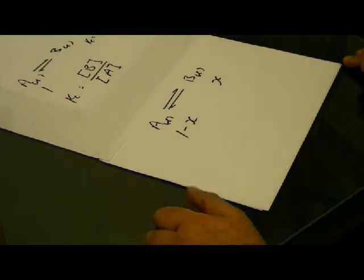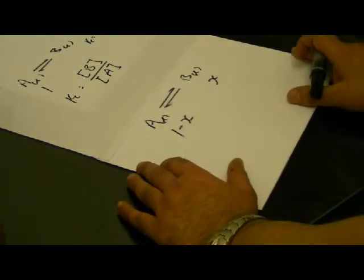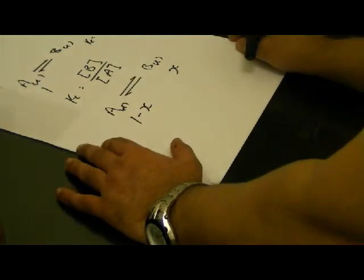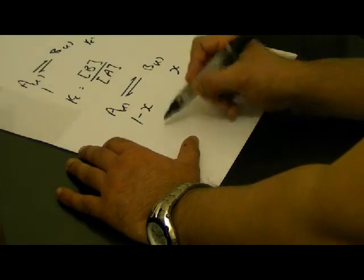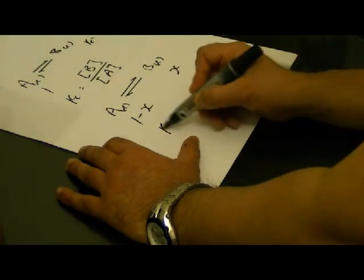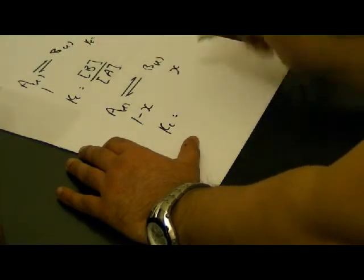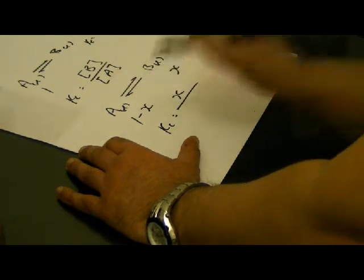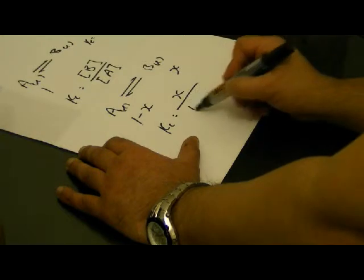Okay, now let's do some funny algebra. I take my Kc expression. Kc equals concentration of B over the concentration of A. And I substitute this time for my terms. Kc is equal to concentration of B, which is X, over concentration of A at the point when equilibrium was achieved, 1 minus X.